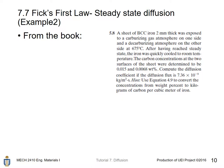After having reached steady state, the iron was quickly cooled to room temperature. The carbon concentration at the two surfaces of the sheet was determined to be 0.015 and 0.0068 weight percent. Compute the diffusion coefficient if the diffusion flux is 7.36 times 10 to the power -9 kg per meter square per second.